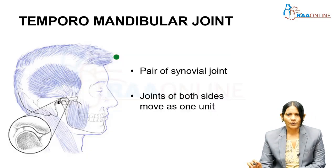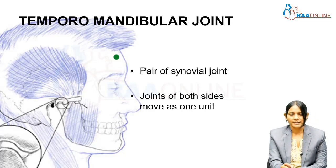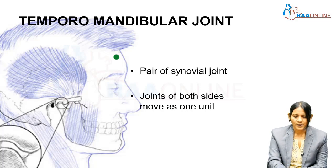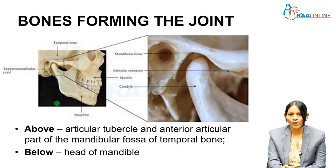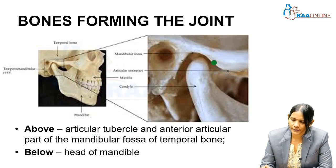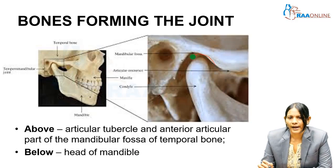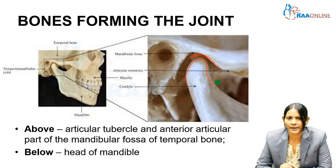The temporomandibular joint is a pair of synovial joints — one on each side — but they always act together as one unit; one side does not act independently of the other. The articular tubercle and the anterior articular part of the mandibular fossa together make up the articular surface on the temporal bone side, and the condylar process — the head of the mandible — forms the lower articulating part of the joint.